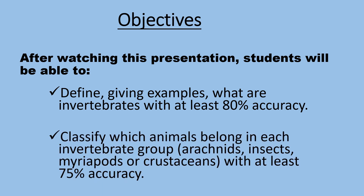Classify which animals belong in each invertebrate group — arachnids, insects, myriapods, or crustaceans — with at least 75% accuracy.